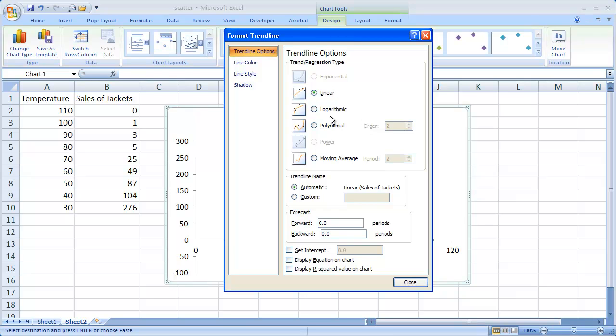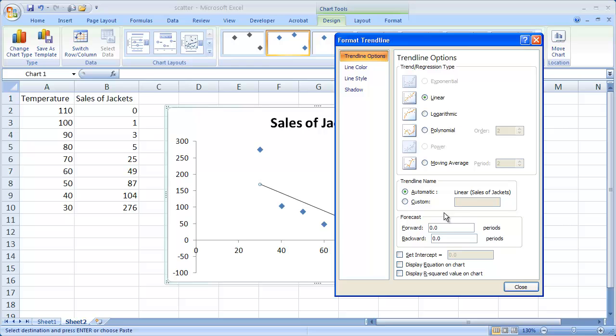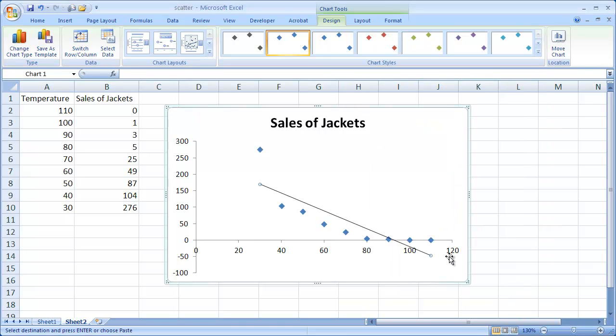Usually I just select linear. I'm not too familiar with the other ones, logarithmic, polynomial, or moving average in relation to the trend line here.